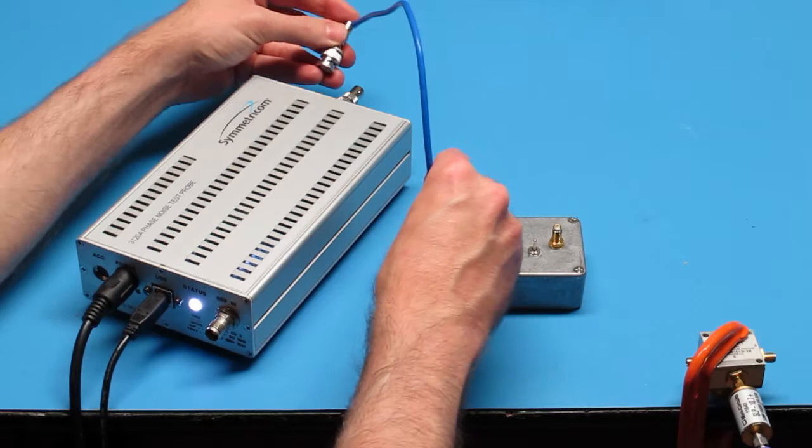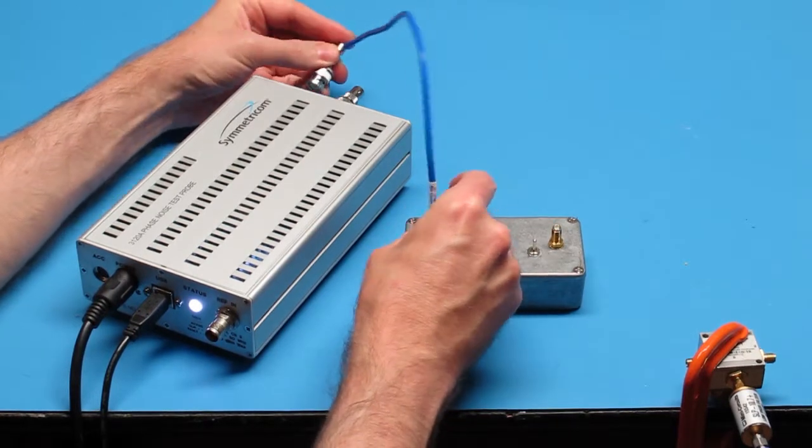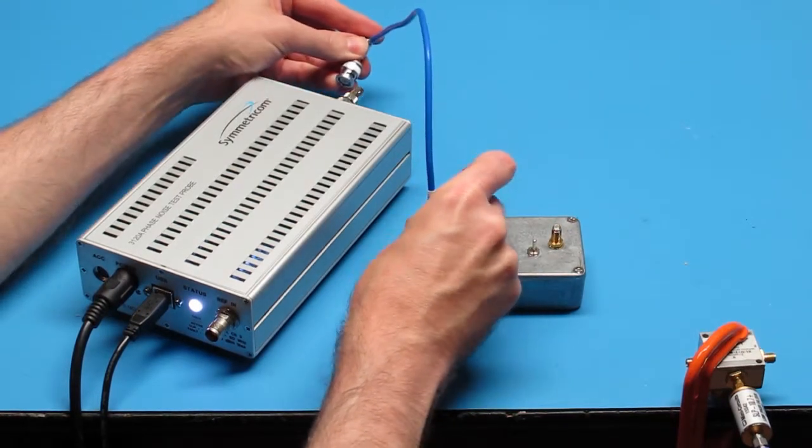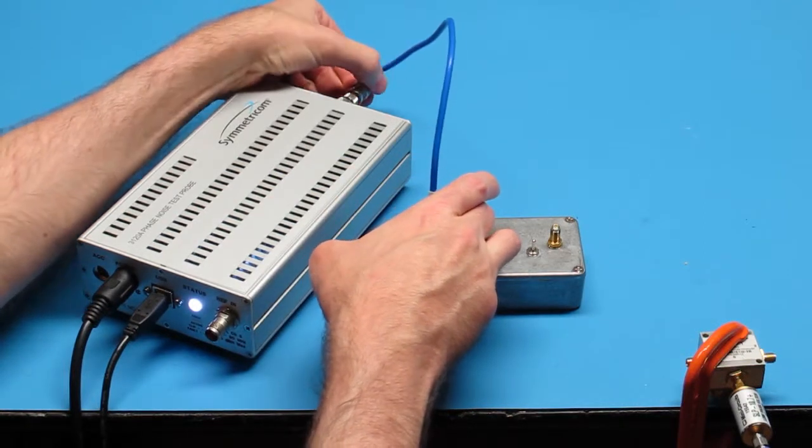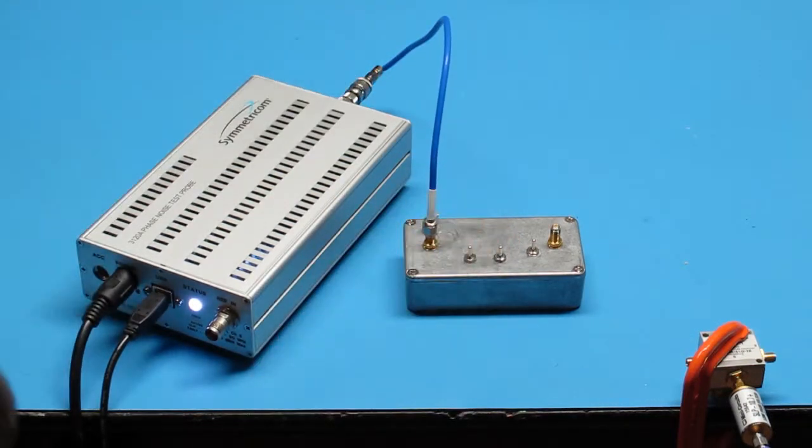The 3120A can tell you exactly what will happen to the signal on the way through this amplifier. In principle, a residual noise test is conducted much like a conventional phase noise or ADEV test. Two signals are applied to the 3120A, one from the DUT and another from a reference source. The 3120A measures the phase difference between these two inputs and analyzes its time and frequency domain properties.